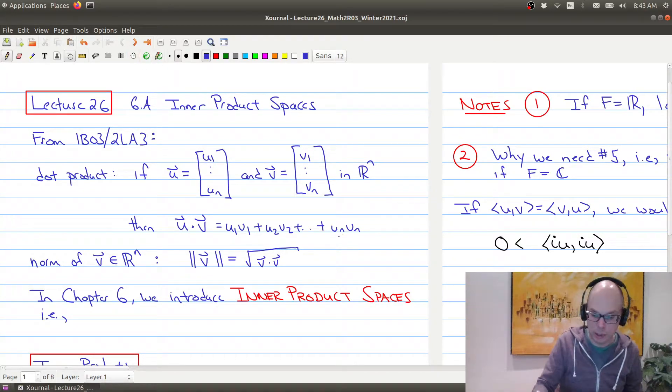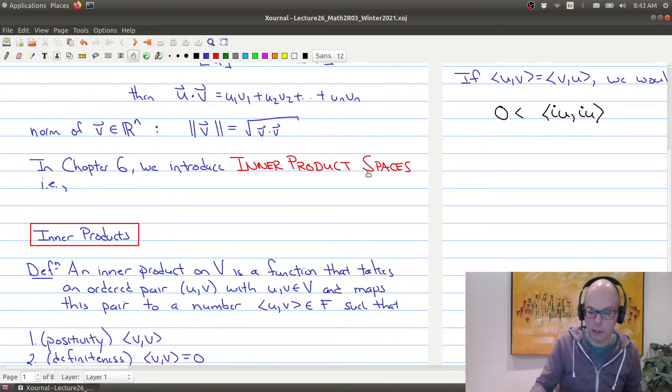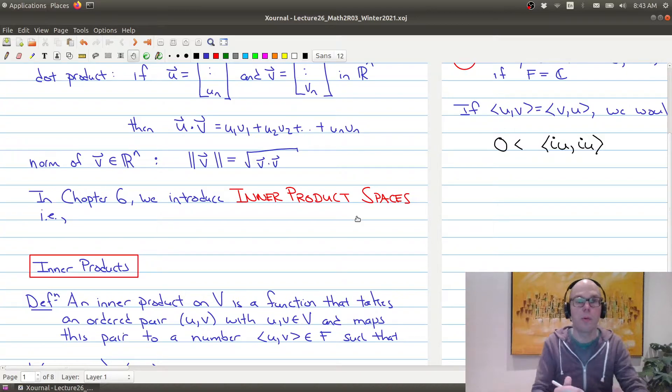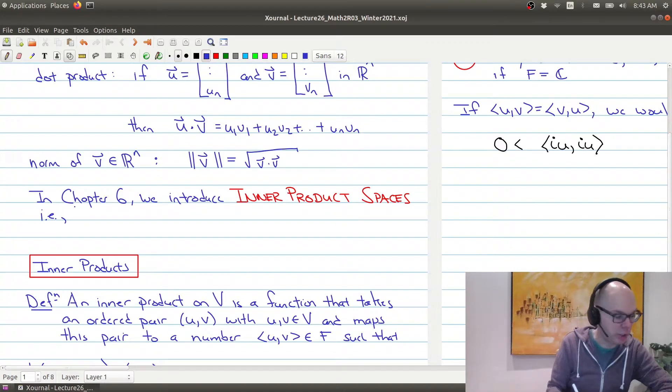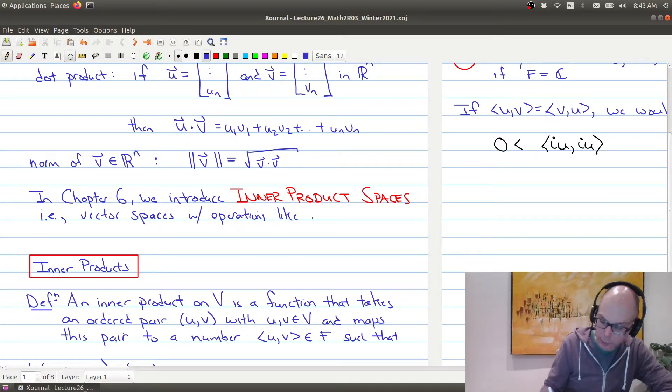So the goal in Chapter 6 is to introduce inner product spaces. What our goal is actually is to introduce an operation similar to the dot product on a vector space that has similar properties. So we're going to introduce vector spaces with operations like a dot product so we can define a norm.